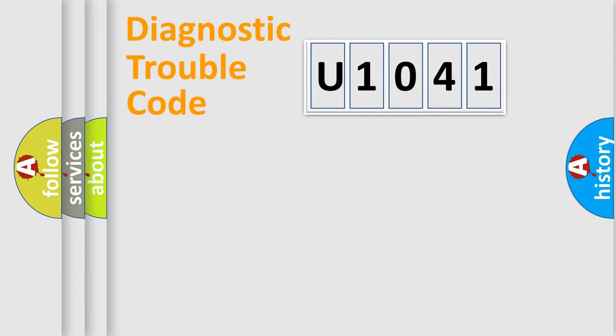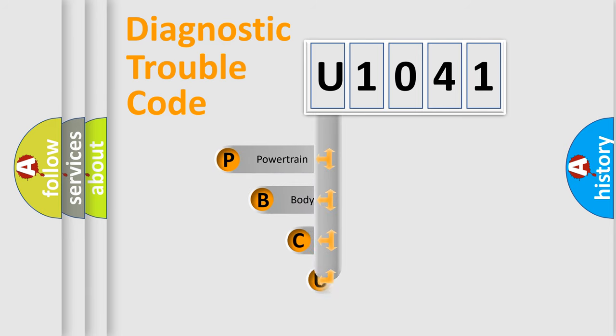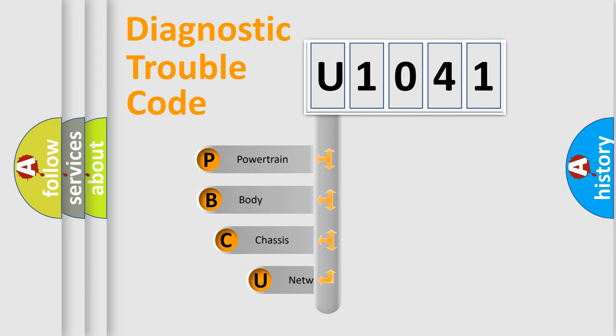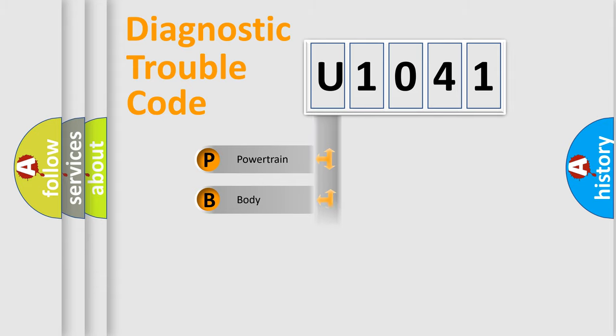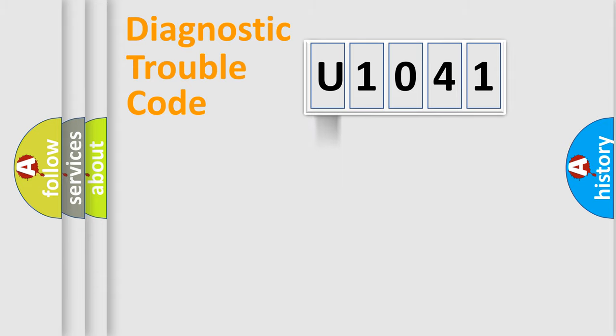First, let's look at the history of diagnostic fault code composition according to the OBD2 protocol, which is unified for all automakers since 2000. We divide the electric system of an automobile into four basic units: Powertrain, Body, Chassis, and Network.